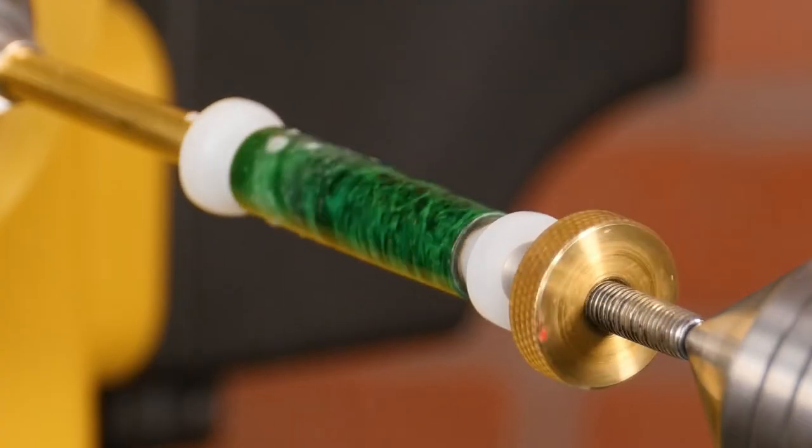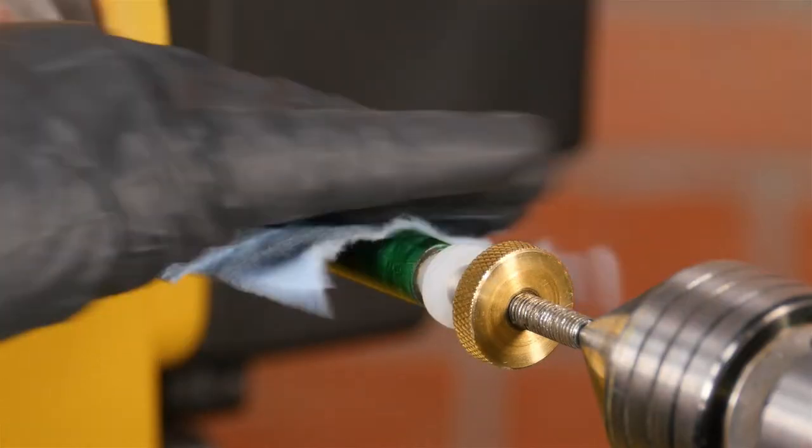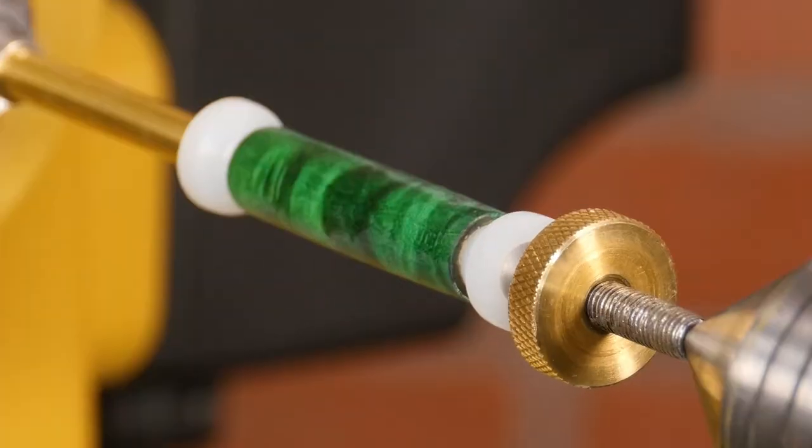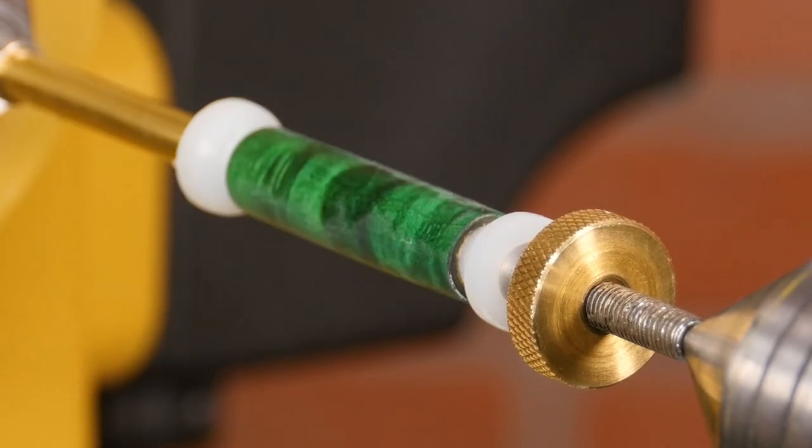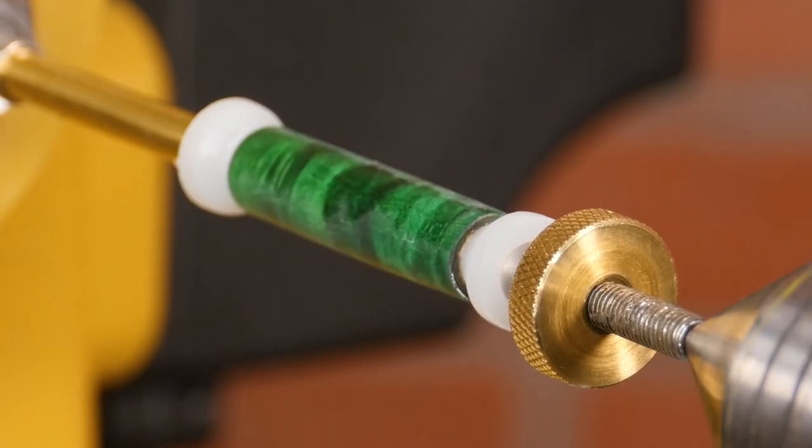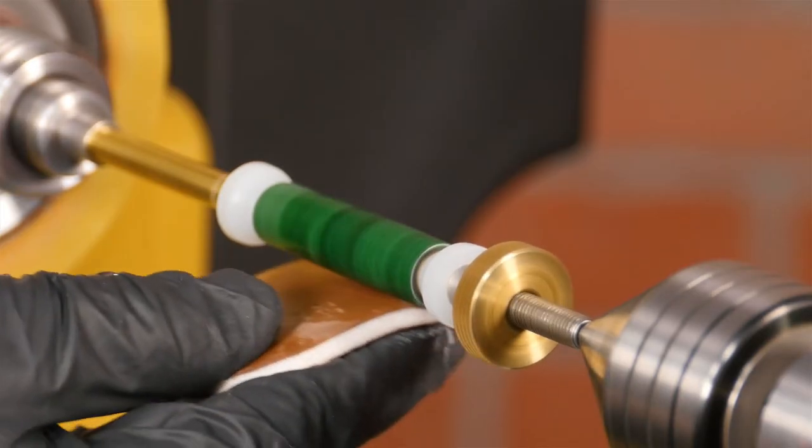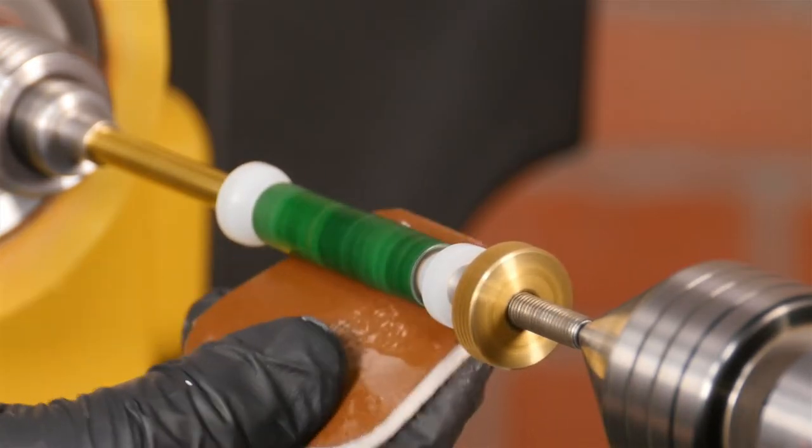The goal here is to level out the finish before moving on to any higher grits. If you see any shiny spots, these are low areas in the finish that need to be leveled out. Turn the lathe back on and continue with the 1500 grit until the blank is uniformly matte with no shiny spots.